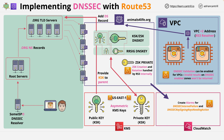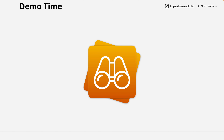That's how Route 53 implements DNSSEC. Now I want to step you through an actual implementation of DNSSEC for a hosted zone within Route 53, and to do that we're going to move across to the AWS console.